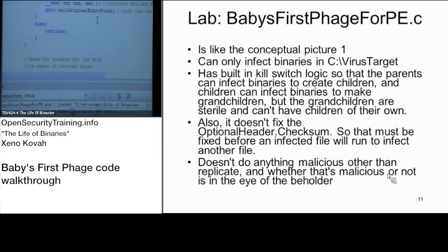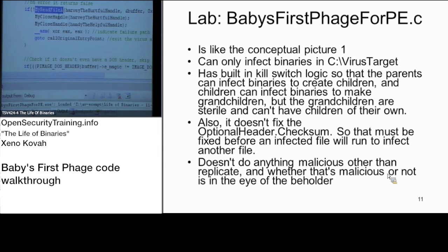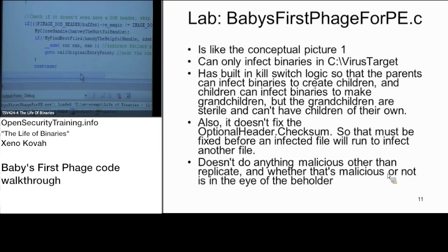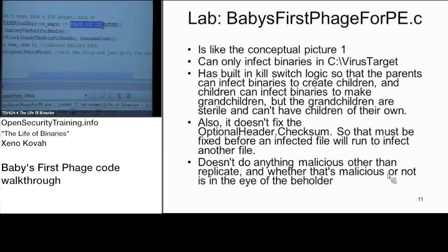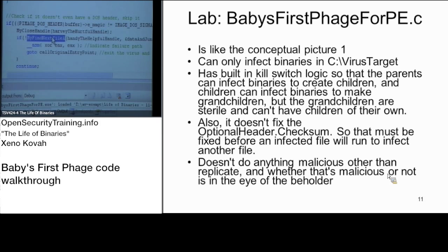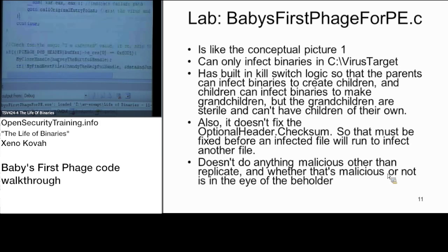CreateFile opens the file, ReadFile reads it in. Once I've found something I want to infect, I do sanity checks: treat the buffer as a DOS header, access the e_magic field (the first two bytes), and if it doesn't equal the MZ signature I move on to the next file. Maybe there's an Excel file in that directory — I don't want to infect it. I need a PE file with the MZ signature at the beginning.